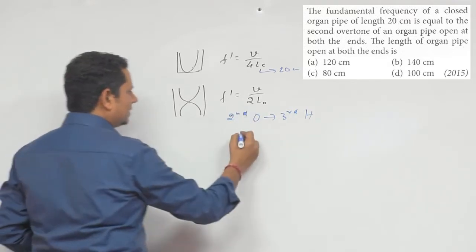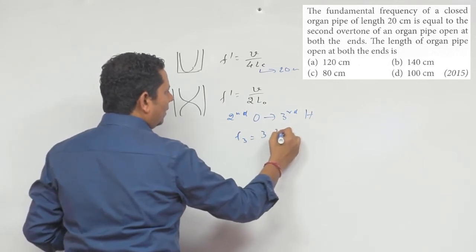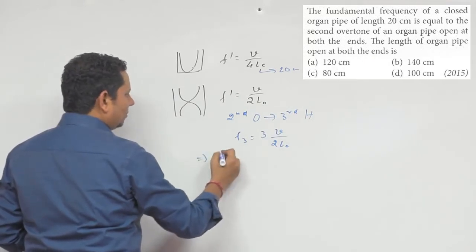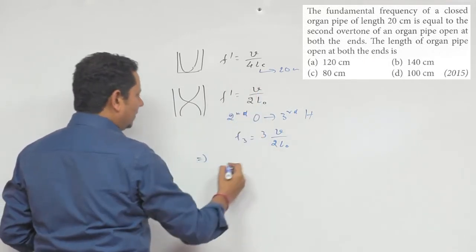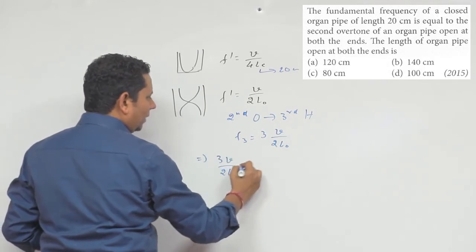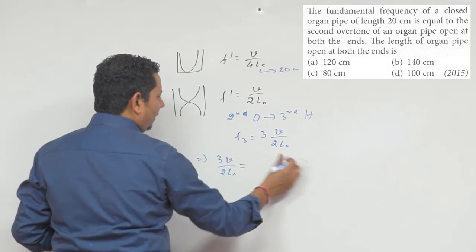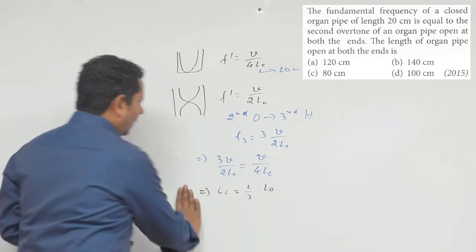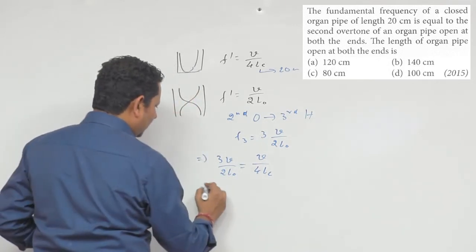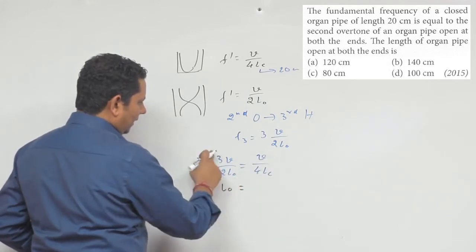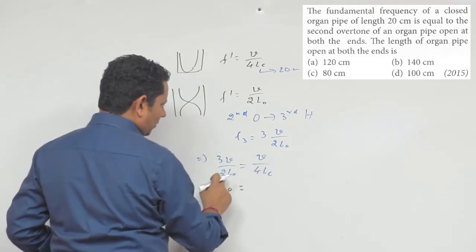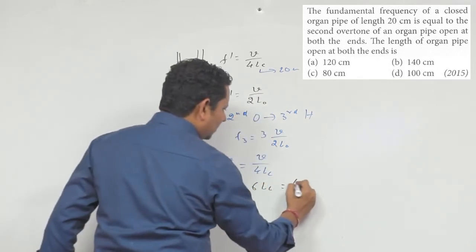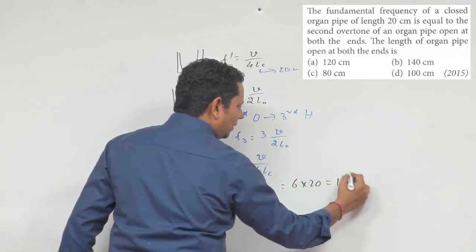The second overtone, equal to the third harmonic, will be equal to V divided by 4L for the closed pipe. Setting this equal to the open pipe expression, the V's cancel, and solving for L open gives us 6 multiplied by 20, which equals 120 cm.